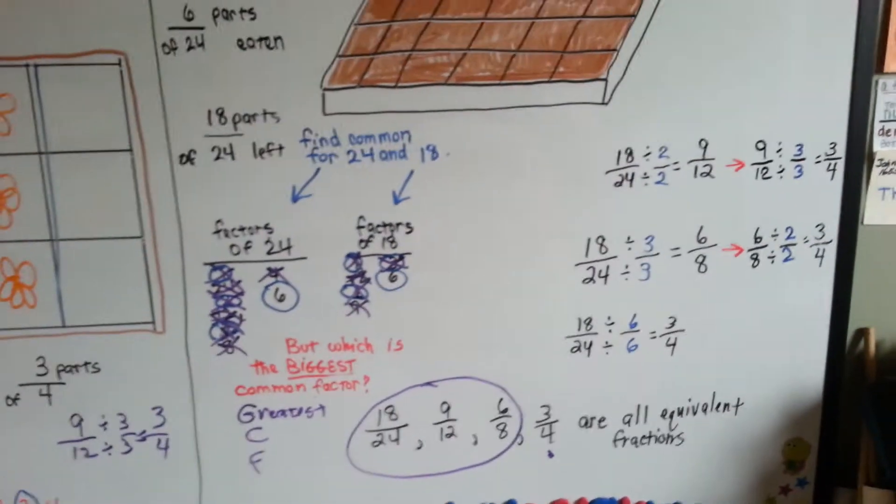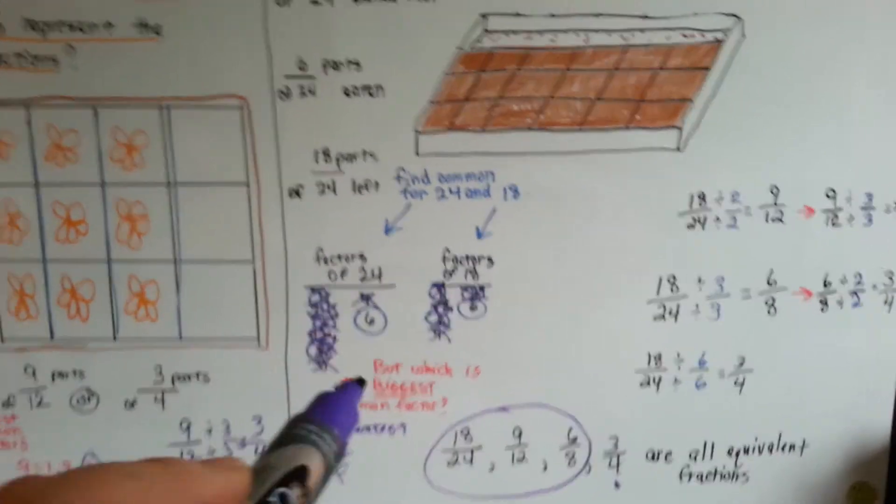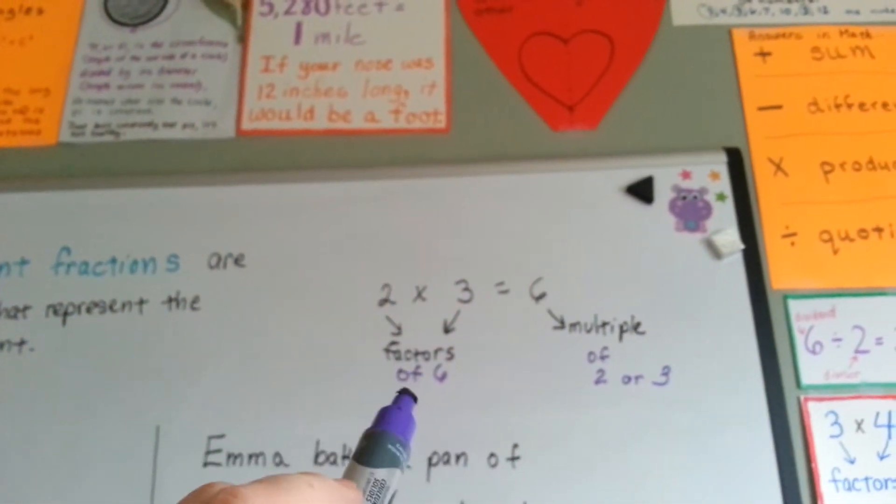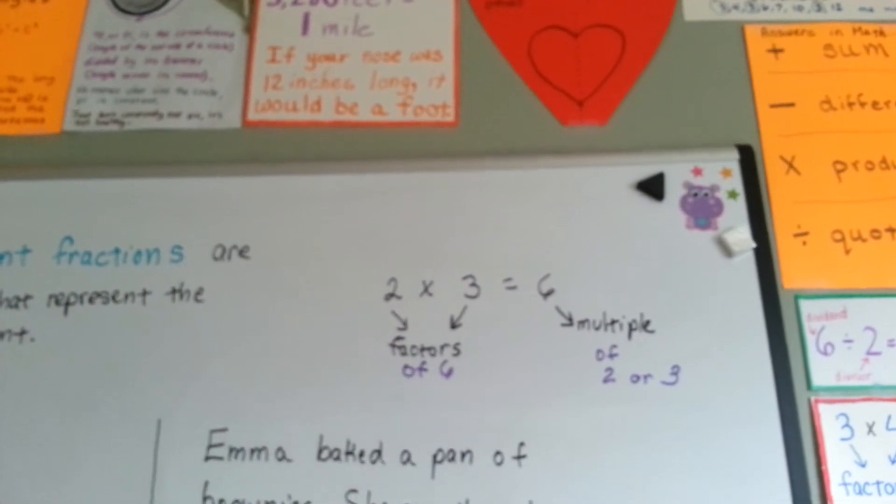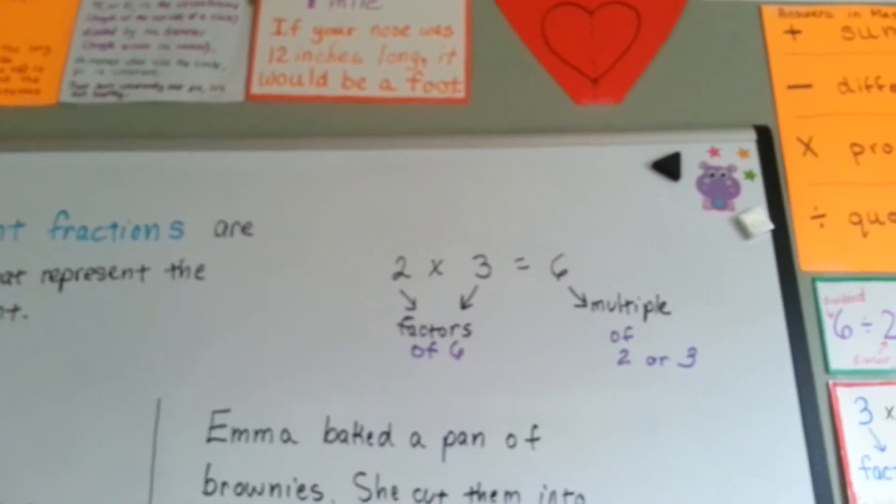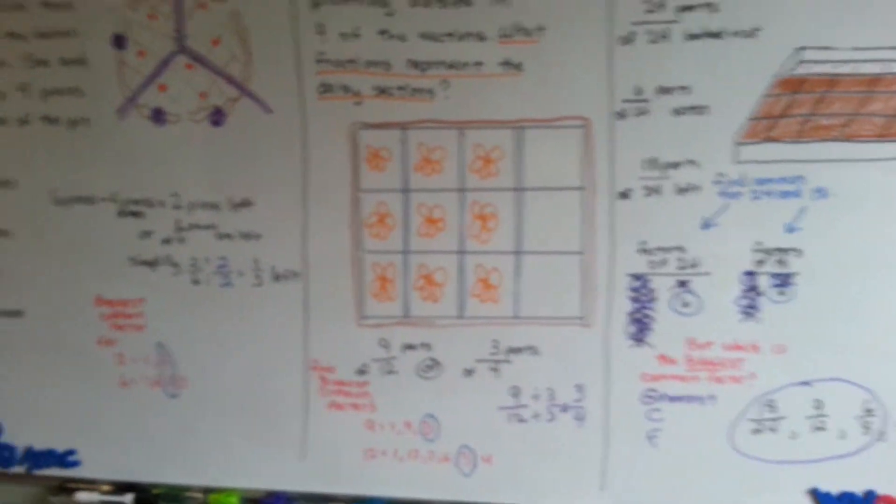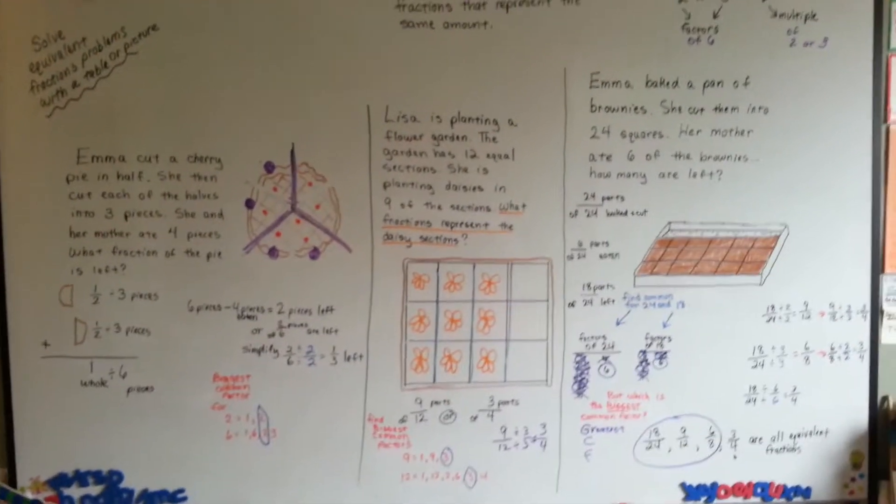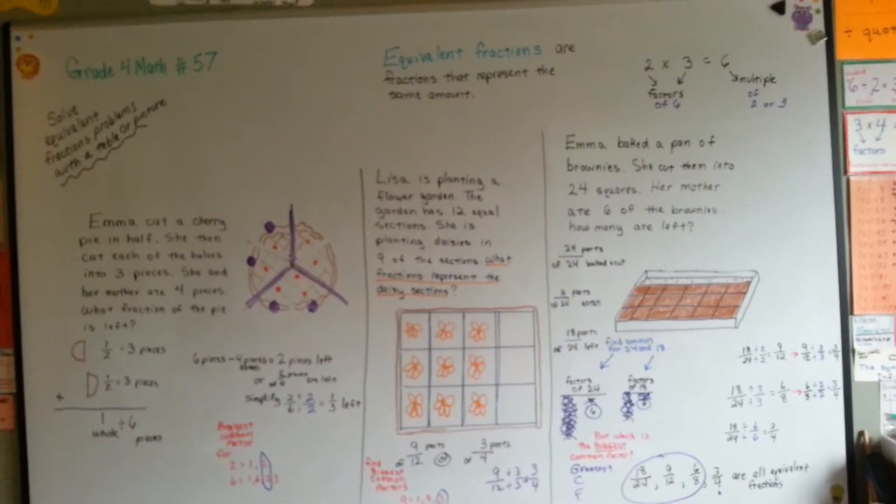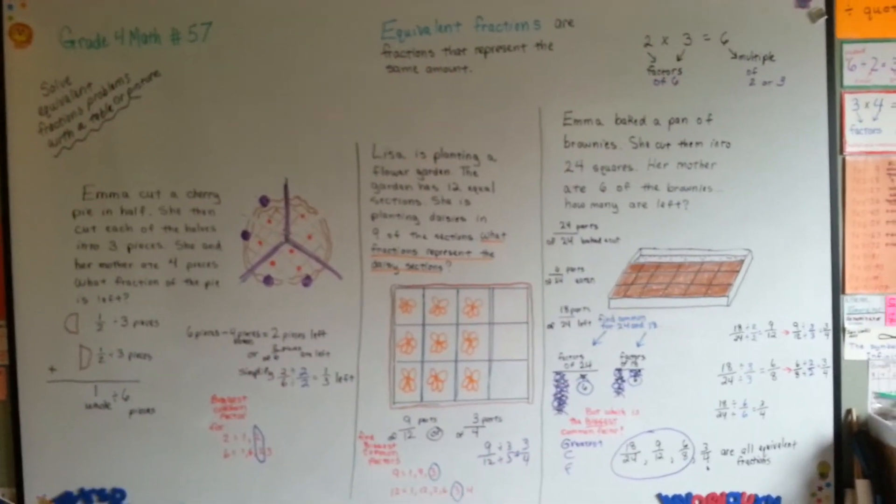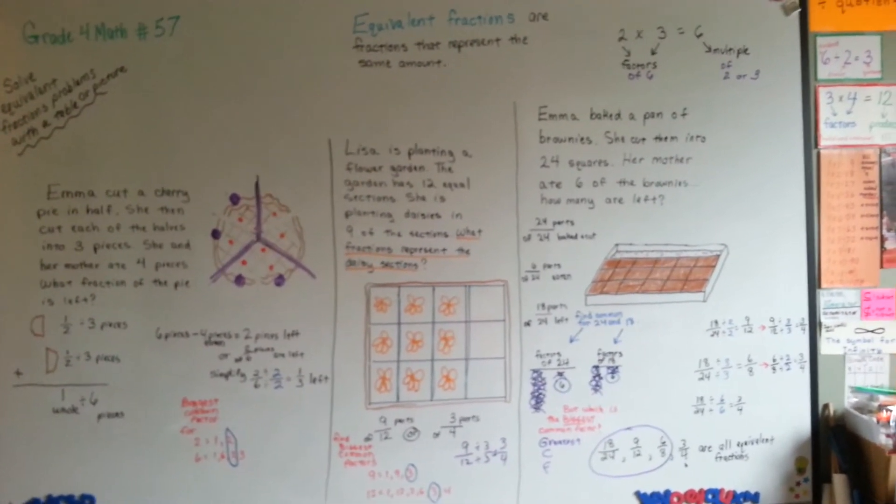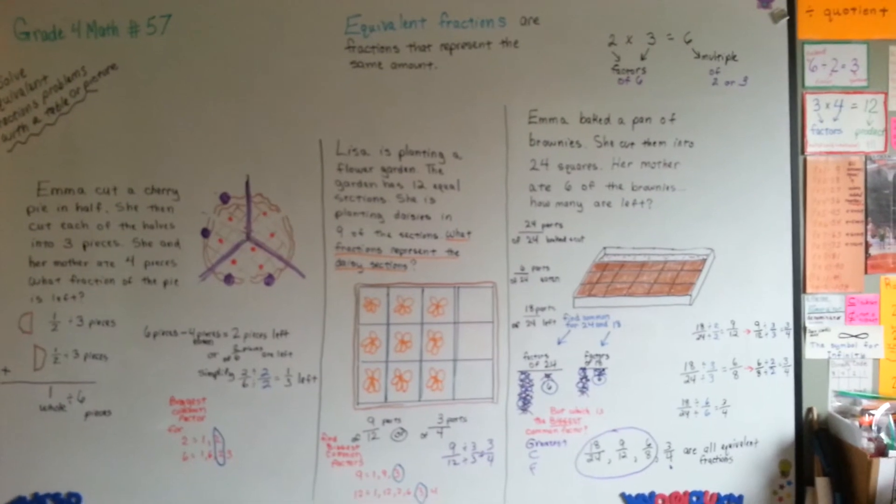Equivalent fractions. Look for the biggest common factor. The biggest common factor they have. The biggest common factor will always help you simplify the fraction, and you'll do less work than if you use twos and threes and stuff like that. You can use the twos and threes, but you're going to take twice as long. You might even have to do it three times.